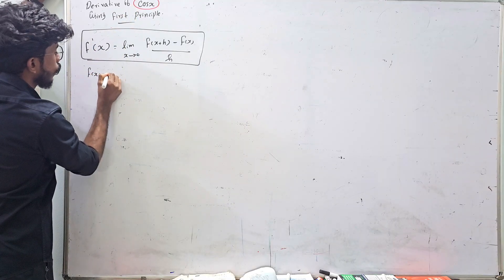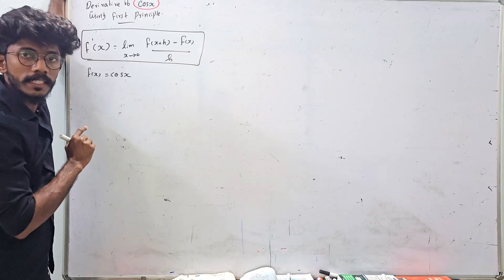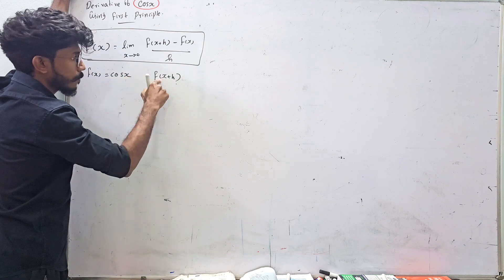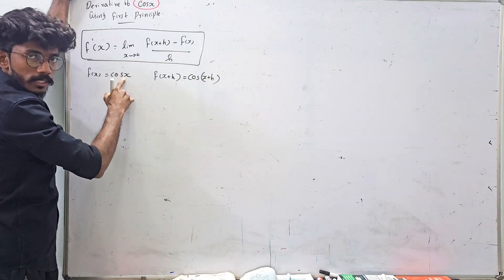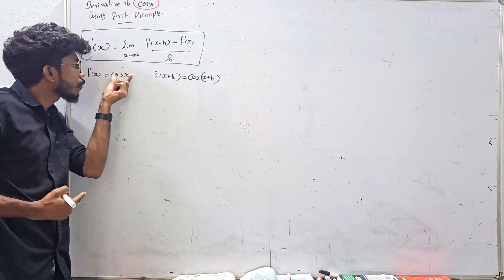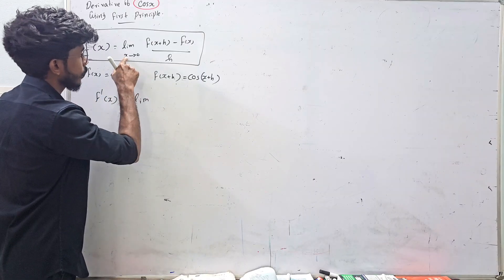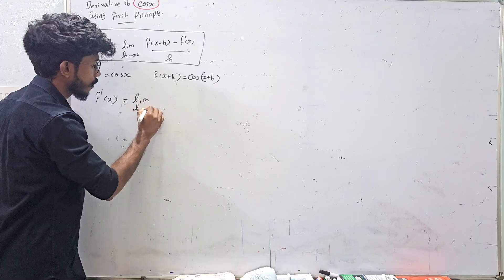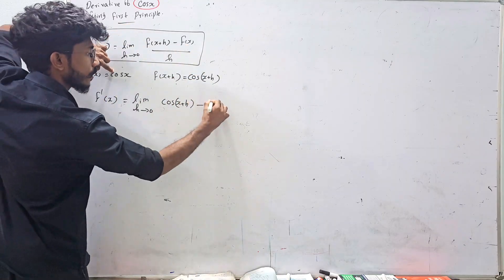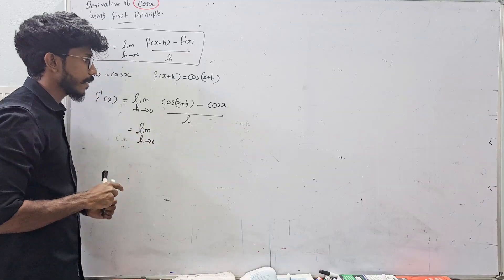In our question, f(x) is cos x. So f(x) = cos x. Now f(x+h) — replace x with x+h — so f(x+h) = cos(x+h). Now f'(x) of cos x is: limit h tends to 0, [cos(x+h) minus cos x] divided by h. Let's apply the formula for cos x minus cos y.